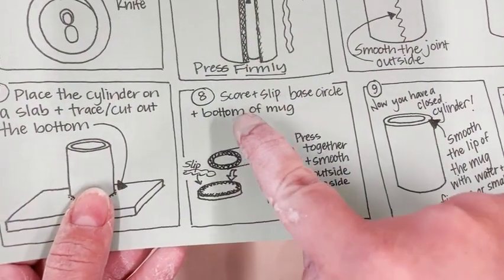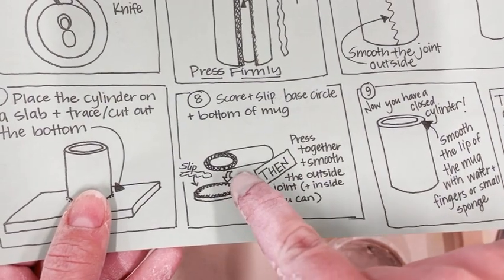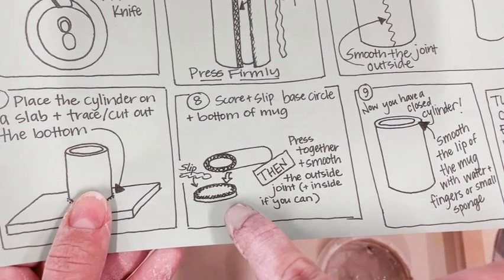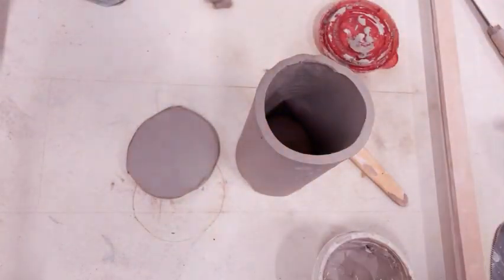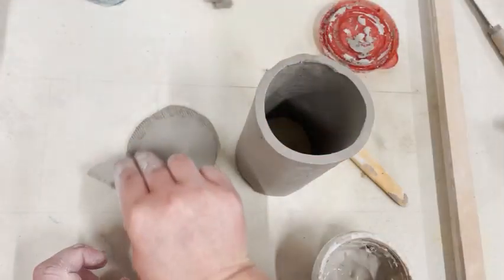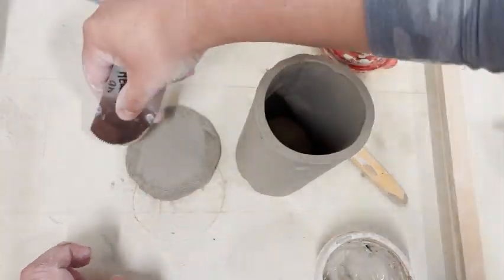Then score and slip the base and bottom of your mug and put it together. And always decide before you do both of these steps which side is the best, the top or the bottom, and have one of those be the top of your mug.